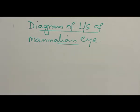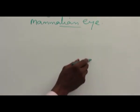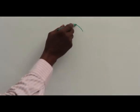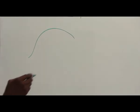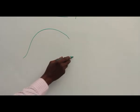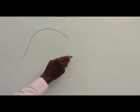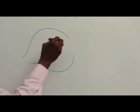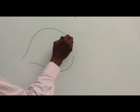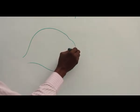The first thing you do is to get the shape. You can get the shape by drawing something like this. You go to the bottom, you do something like this. Then the front, we said, is modified into cornea.